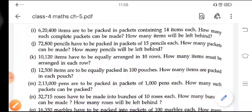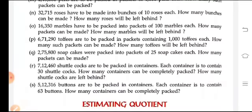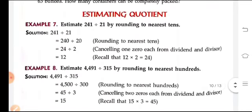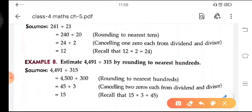The rest of the questions you have to try to solve by your own — they are very simple. Now we will move to our next topic, that is estimating questions. These questions are based on estimation that you learned in your previous chapter — rounding to the nearest 10, 100, and 1,000. Similarly, you will estimate the numbers here and after estimating, divide them. Here a question is given: 4,491 divided by 315, rounding to the nearest 10.